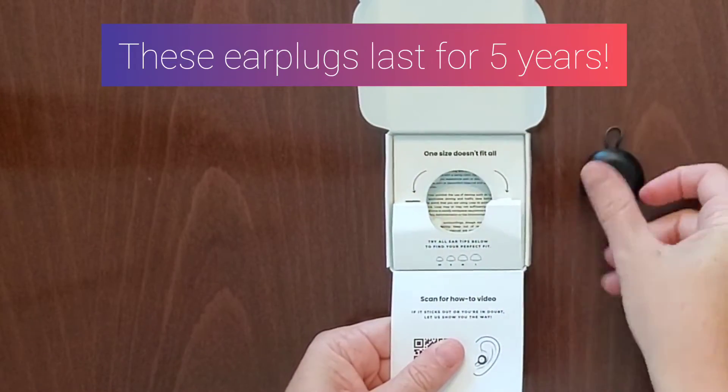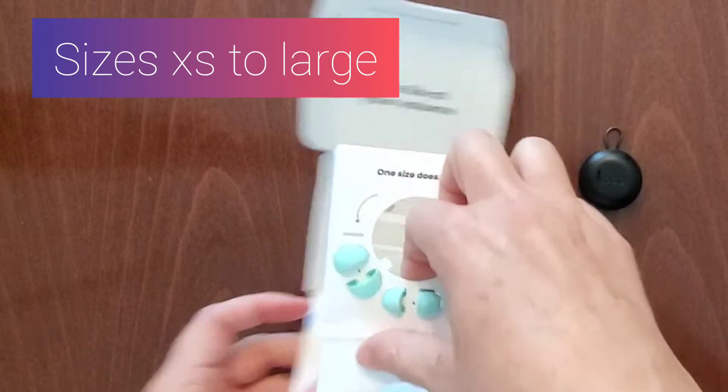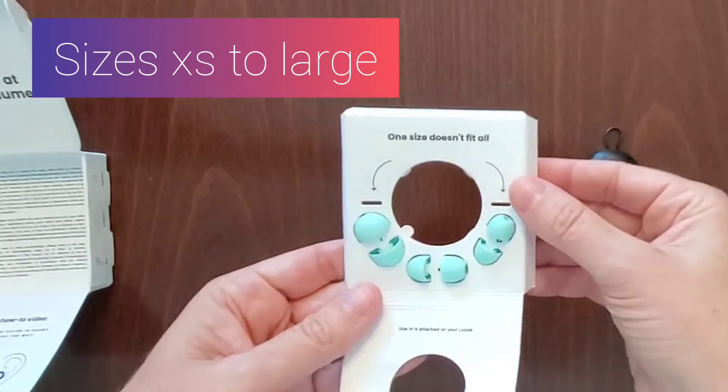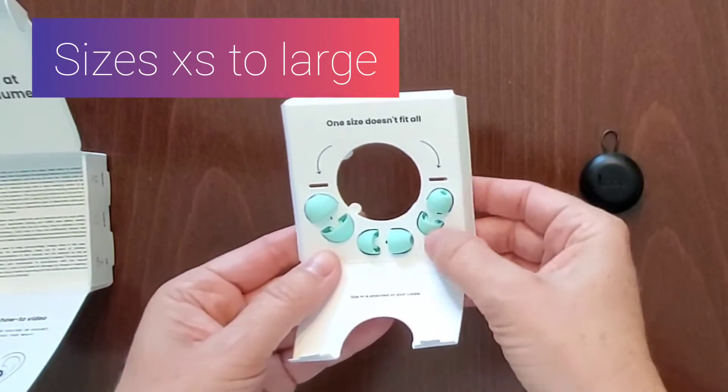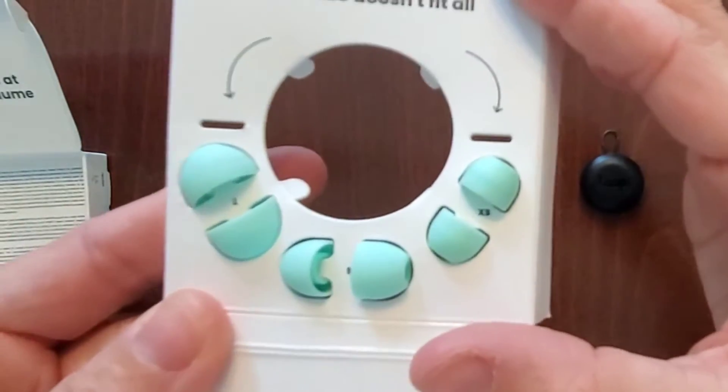You get this little carrying case, which is great, and it comes with a whole bunch of different sizes so you can size them for your ears. It comes with the medium on the earplugs, but you have extra small, small, and large, as you can see here.